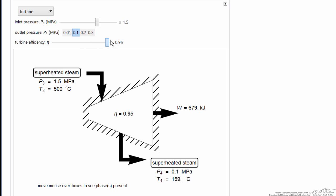Likewise, as we go to higher efficiencies, we get more work out of the turbine. And at higher efficiencies, then we have a lower temperature leaving the turbine.